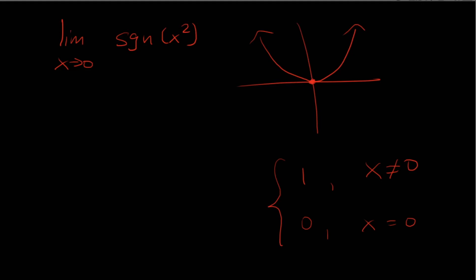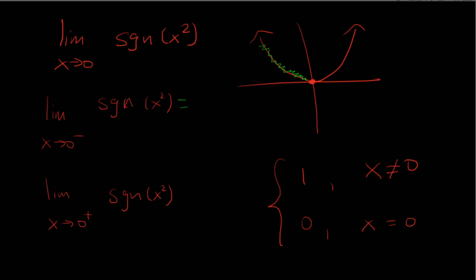So when I'm looking at this limit, I want to approach it from the left and from the right. In both cases, sign of x squared is positive. If I look at it from the left, it's positive — so it's positive 1. And then from the right, it's positive, so this should also be positive 1. The left-hand and the right-hand limits are the same; therefore, the limit is 1.